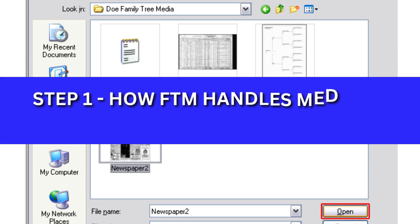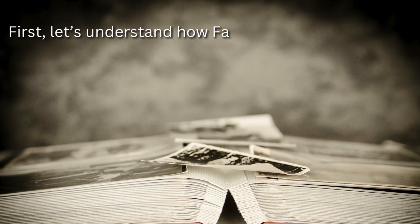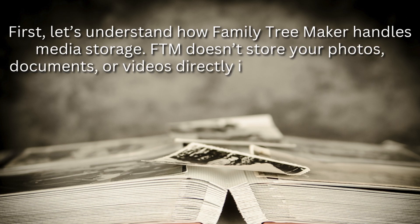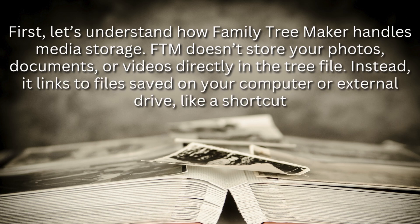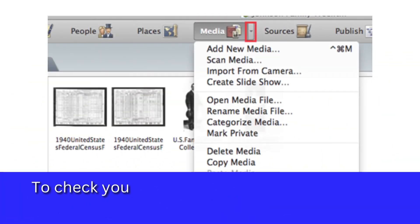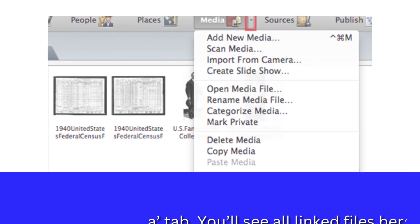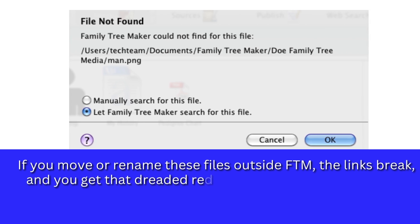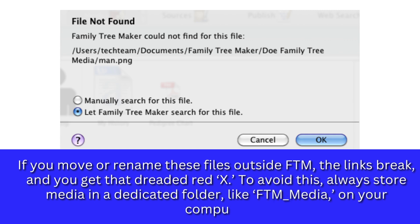Step 1: How FTM Handles Media File Storage. First, let's understand how Family Tree Maker handles media storage. FTM doesn't store your photos, documents, or videos directly in a tree file. Instead, it links to files saved on your computer or external drive, like a shortcut. To check your media, open FTM, go to the tree menu, and click the Media tab. You'll see all linked files here. If you move or rename these files outside FTM, the links break and you get that dreaded red X. To avoid this, always store media in a dedicated folder, like FTM Media, on your computer or an external drive, and keep it consistent across devices.